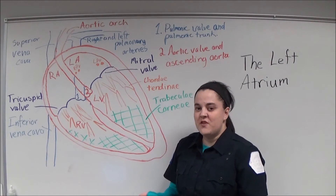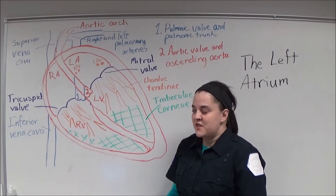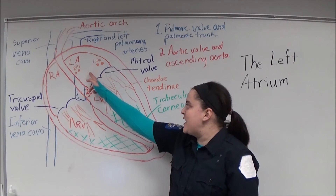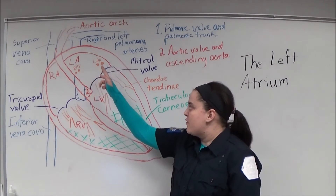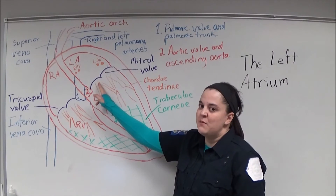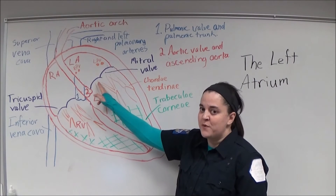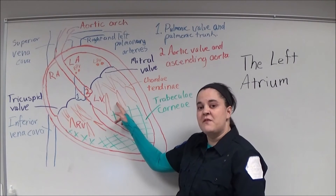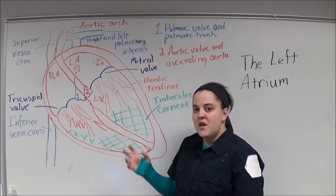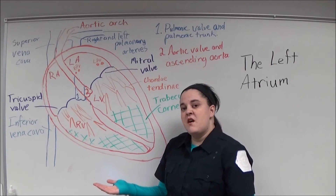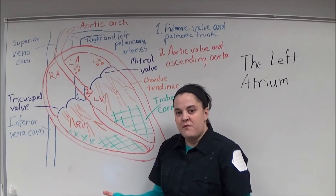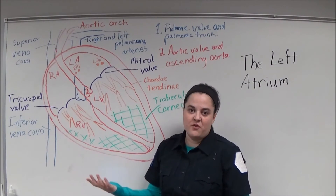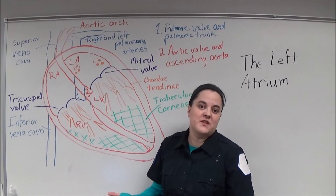When the left ventricle is in diastole and it's relaxed, blood passes from the left atrium through the mitral valve — named because of its resemblance to the Pope's mitre — into the left ventricle. Prior to the closing of the mitral valve, the left atrium contracts, causing the atrial kick, and then closes.